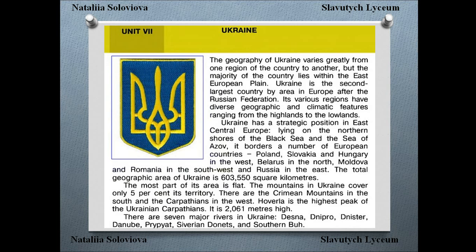The total geographic area of Ukraine is 603,550 square kilometers. The most part of its area is flat. The mountains in Ukraine cover only 5% of its territory — these are the Crimean mountains in the South and the Carpathians in the West. However, Hoverla is the highest peak of the Ukrainian Carpathians, at 2,061 meters high.